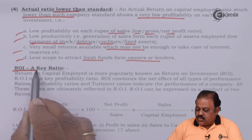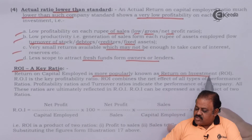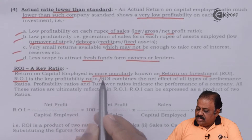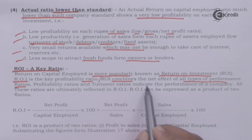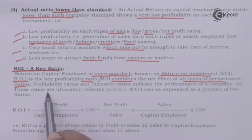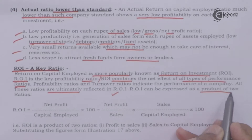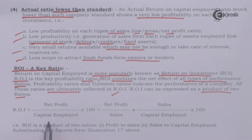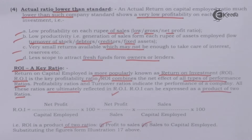Return on investment is a key ratio — a very important profitability ratio. Return on capital employed is more popularly known as return on investment. Return on investment combines the net effect of all types of performance ratios; profitability ratios and turnover ratios are all ultimately reflected in return on investment. Return on investment can be expressed as a product of two ratios: Return on investment = (Net profit / Sales × 100) × (Sales / Capital employed × 100). That is, return on investment is a product of profit-to-sales ratio and sales-to-capital-employed ratio.